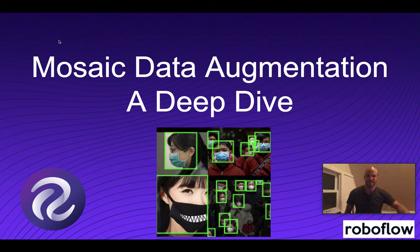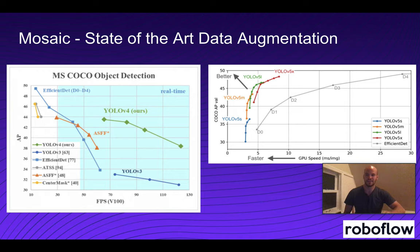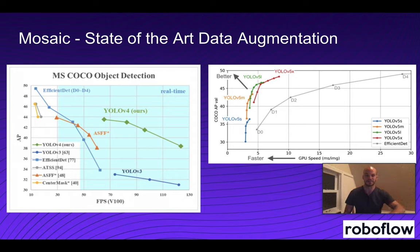Hey guys, this is Jacob from RoboFlow here today to talk about mosaic data augmentation, which is a new and very exciting augmentation technique in computer vision. Mosaic data augmentation is a new augmentation that is pushing the state-of-the-art for object detection models.